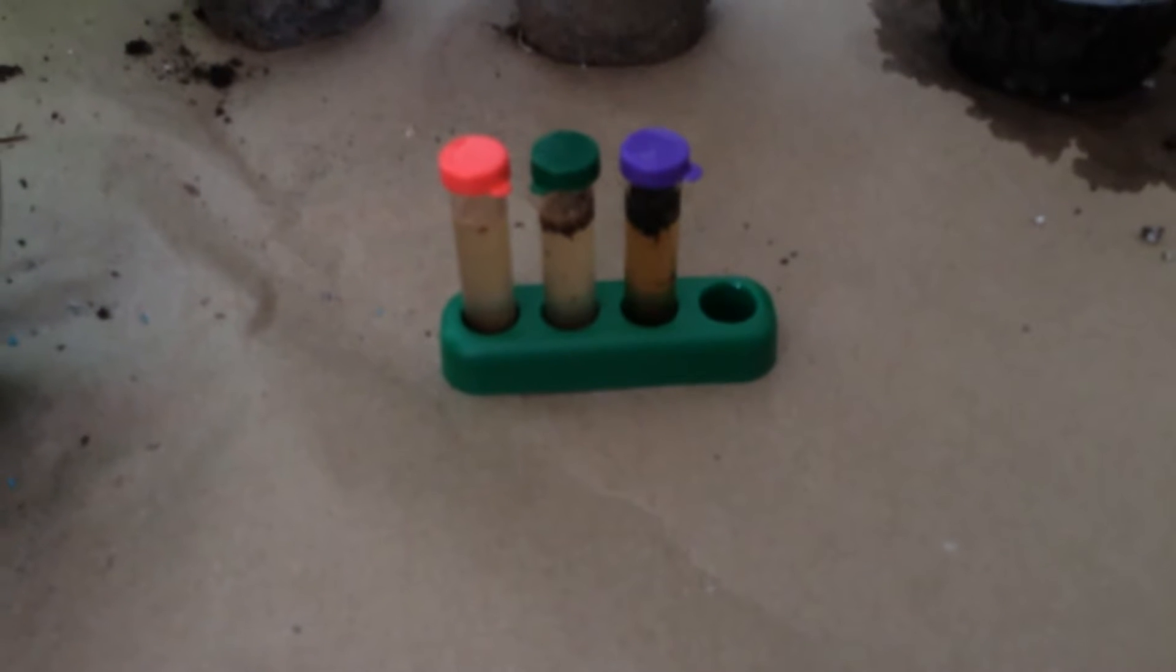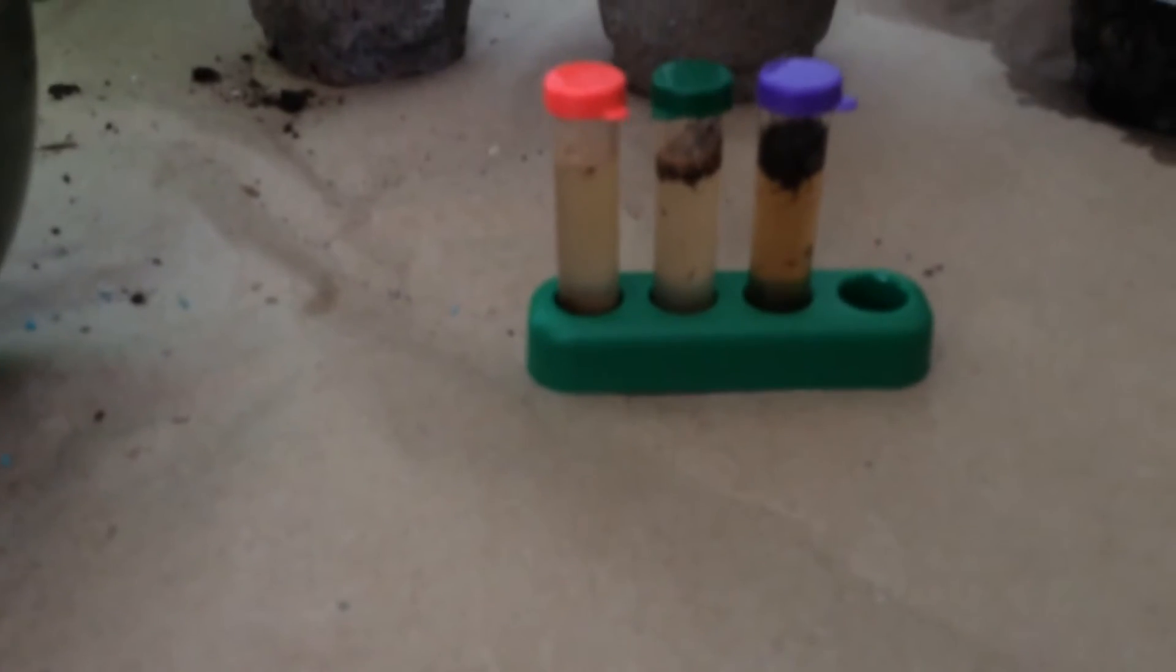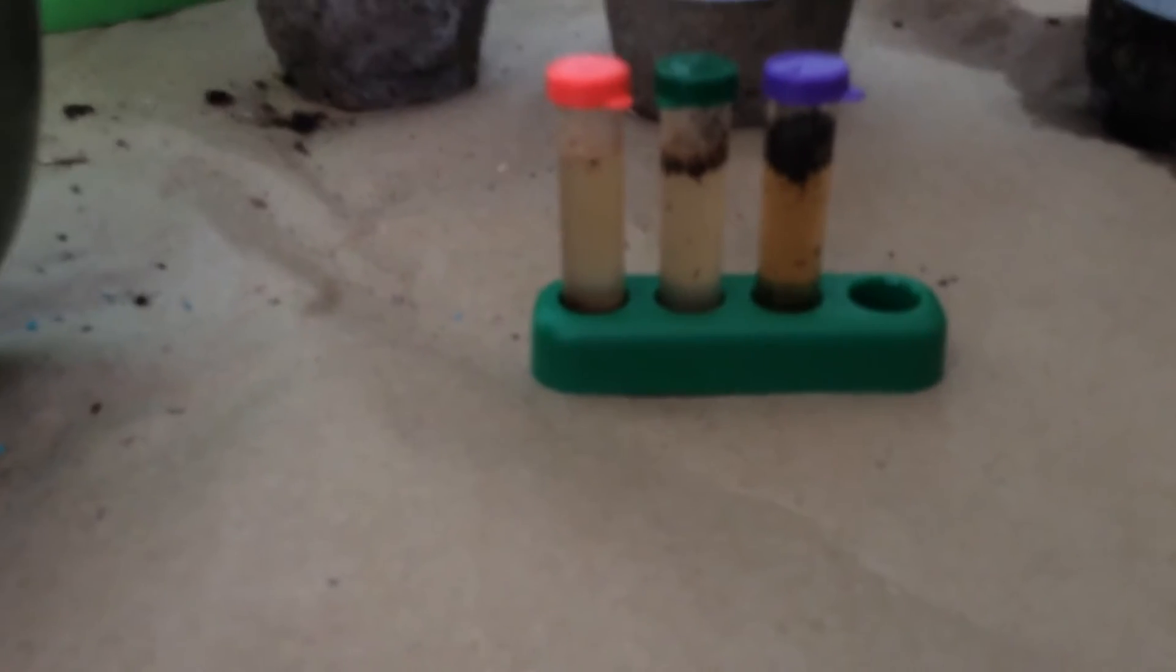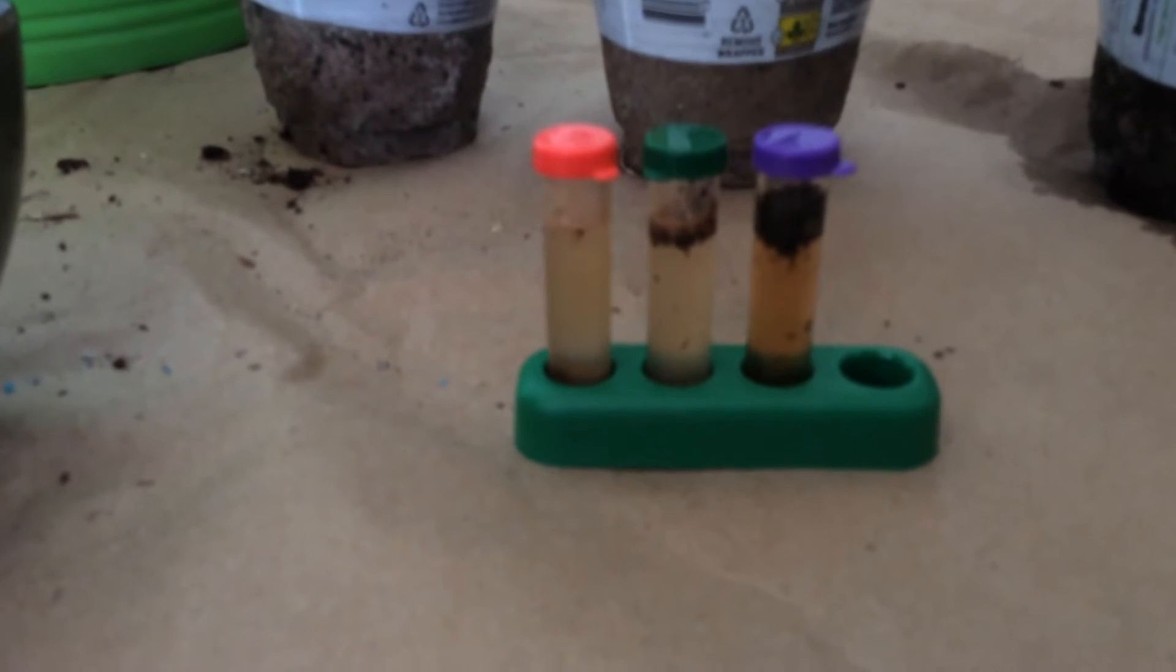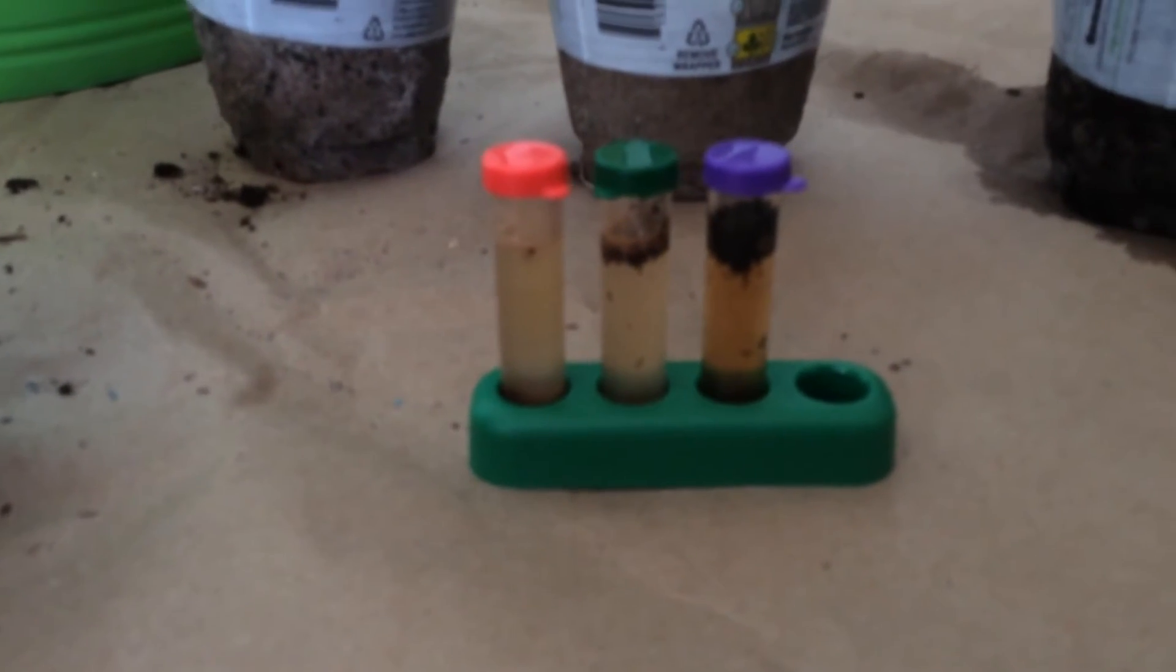Then I tested for the level of potassium. The darker the solution means the more potassium is present, and as you can see here, the purple has more potassium than either the red, which is the soil, or the green, which is the fertilizer.